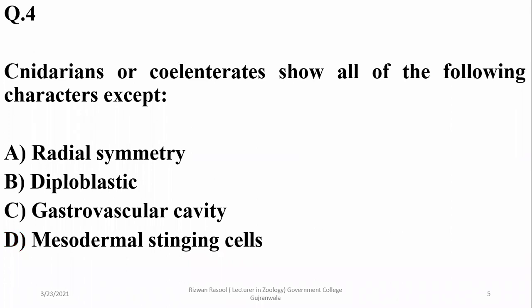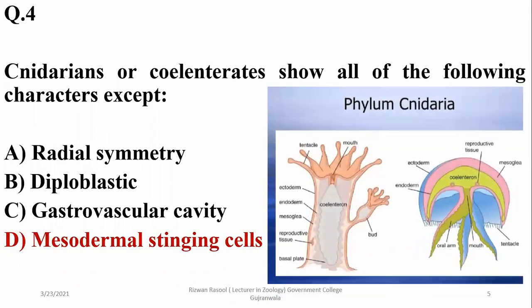Question four: cnidarians or coelenterates show all of the following characteristics except that they have mesoderm. Cnidarians are radially symmetrical, diploblastic, and have a gastrovascular cavity, but mesoderm is absent in cnidarians. So the right option is delta — mesoderm is not found in cnidarians.